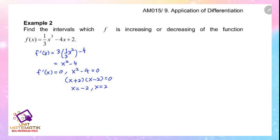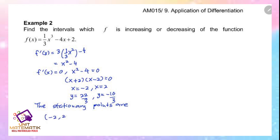Substitute both values into the function to get the y values. When x equals negative 2, y equals 22 over 3. When x equals 2, y equals negative 10 over 3. The stationary points are (negative 2, 22/3) and (2, negative 10/3).